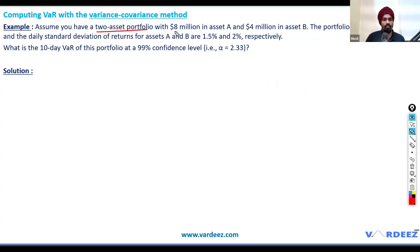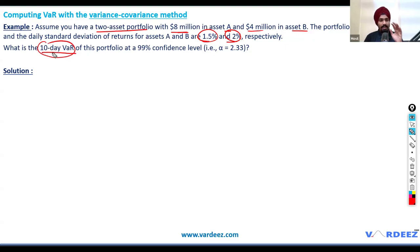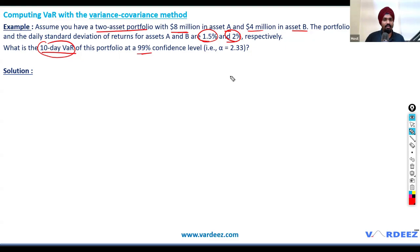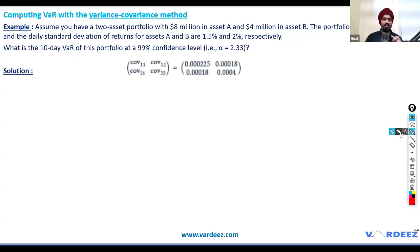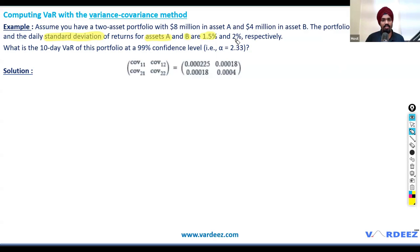Example: a two-asset portfolio with $8 million in asset A and $4 million in asset B. Daily standard deviation for A is 1.5% and B is 2%. Correlation is 0.6. Calculate the 10-day VAR at 99% confidence. First, create the variance-covariance matrix.